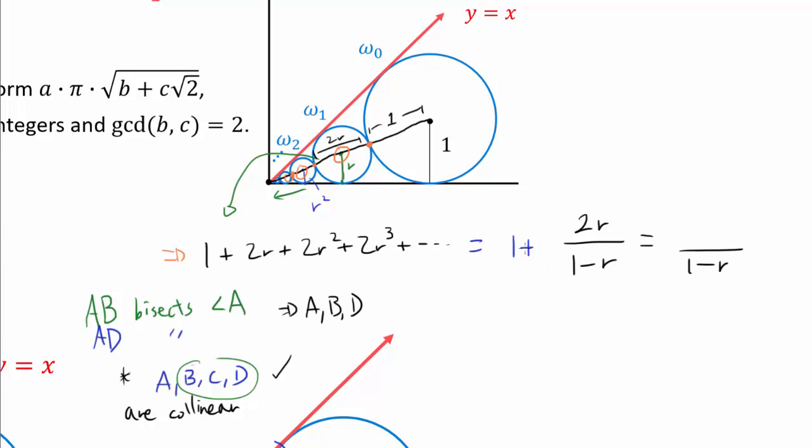Adding this up gets you 1 minus R plus 2R on the top. So that's 1 plus R. So that's what we wish to find.